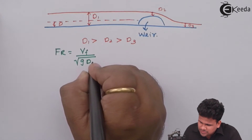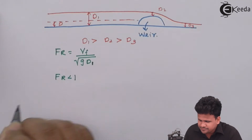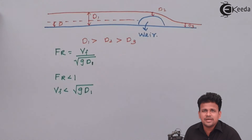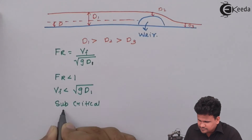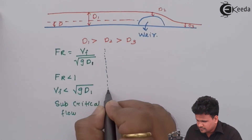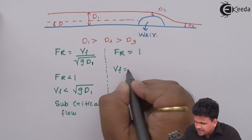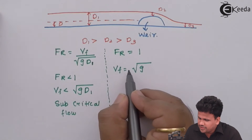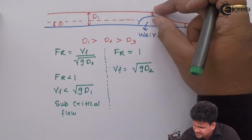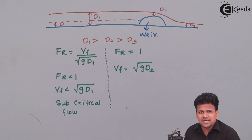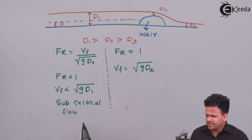For subcritical flow, which occurs on the left-hand side of the weir at depth d1, the Froude number is less than one. This means the velocity of the fluid is less than the square root of g times d1. As the fluid flows over the weir, the hydraulic depth decreases from d1 to d2, causing the velocity to increase.